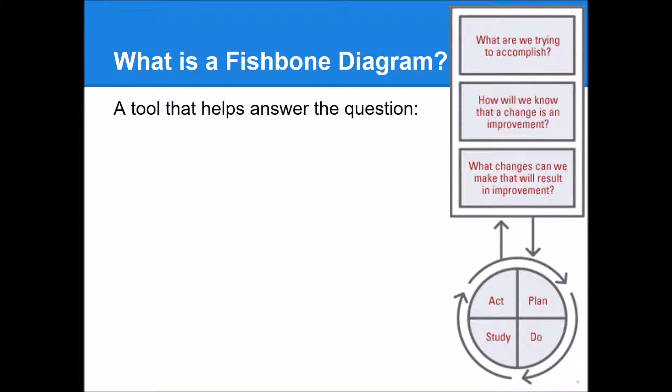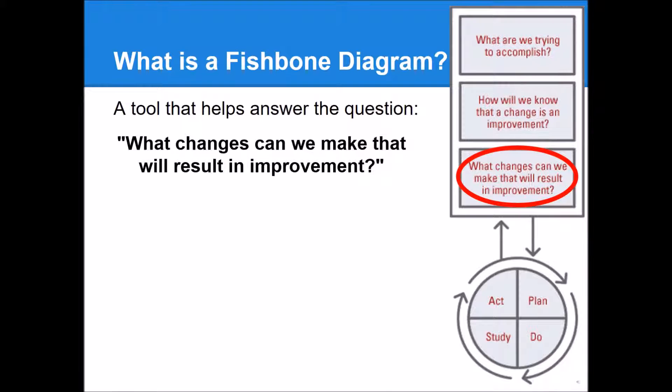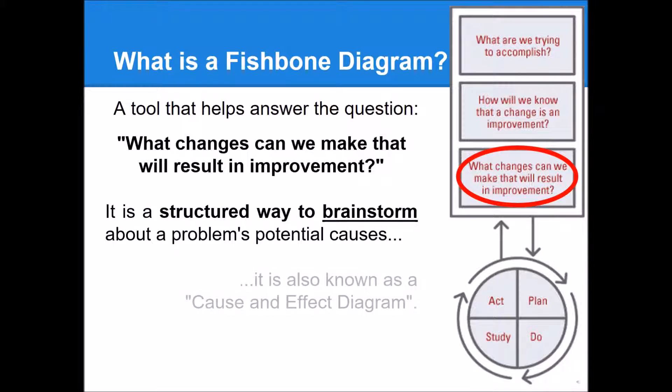A fishbone diagram is a tool that helps you answer the question: what changes can we make that will result in an improvement? They are simply a structured way of brainstorming about a problem's potential causes. They're also known as cause and effect diagrams.